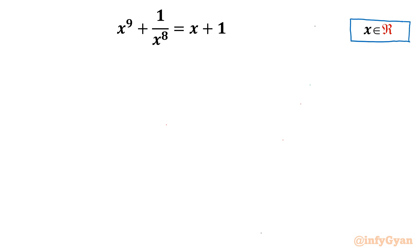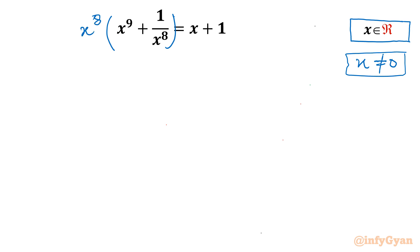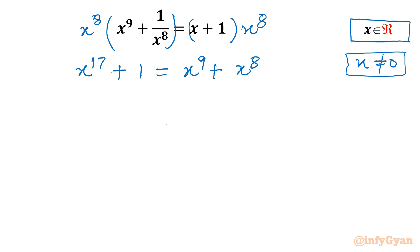Let's get started by writing the domain as usual. The denominator cannot be 0, so x can't be 0. Since x is a non-zero value, I can multiply both sides by x^8. Expanding, we get x^17 + 1 = x^9 + x^8.